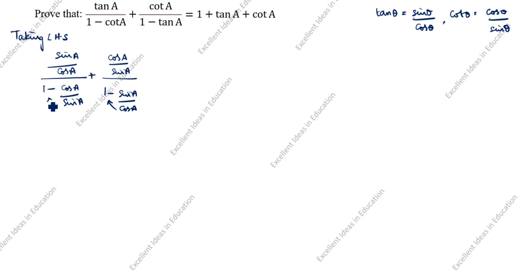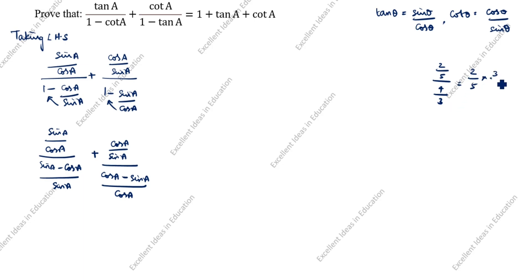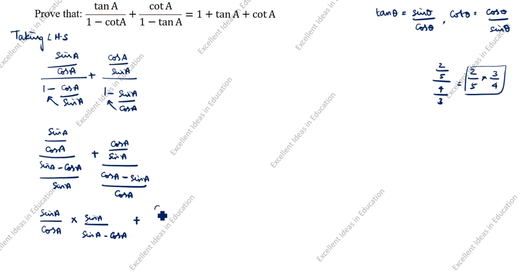We will cross this one. Next step: sin A divided by cos A divided by 1 minus cos A divided by sin A, plus cos A divided by sin A divided by 1 minus sin A divided by cos A. Using the method where a divided by b divided by c equals a over b times 1 over c, we get: sin A divided by cos A into sin A divided by sin A minus cos A, plus cos A divided by sin A into cos A divided by cos A minus sin A.